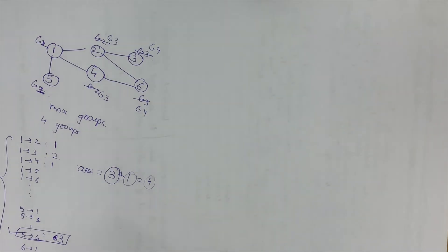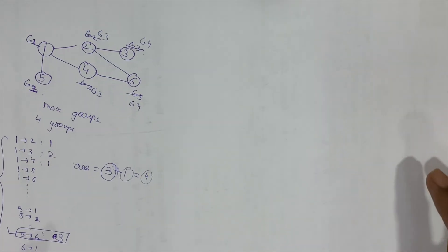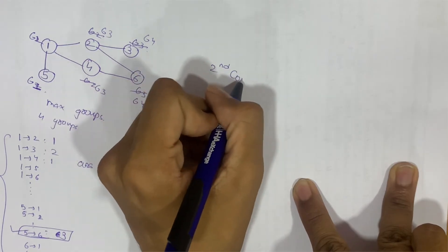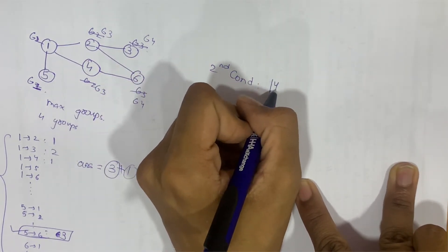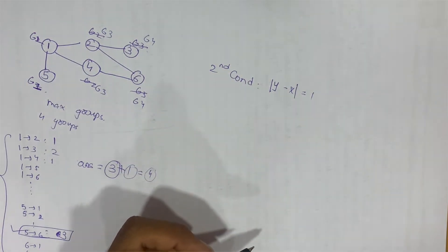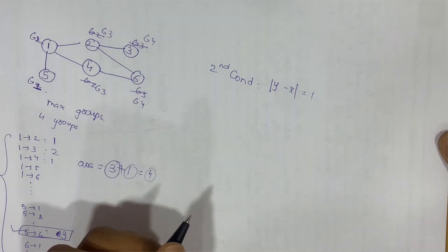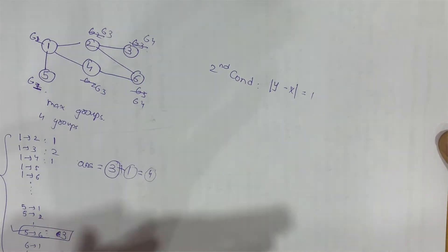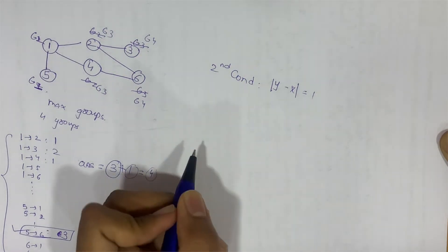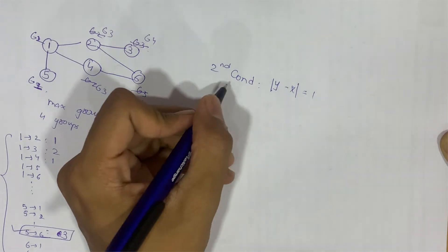The second thing to check is when grouping is not possible. The condition that the absolute difference of group indices must be 1 is similar to the bipartite graph condition, where we try to assign one of two colors to adjacent vertices such that no edge has the same color.